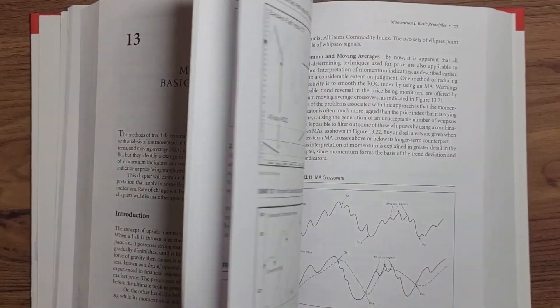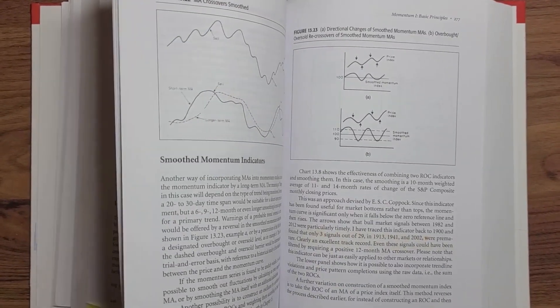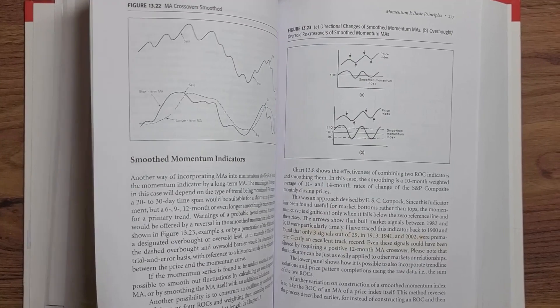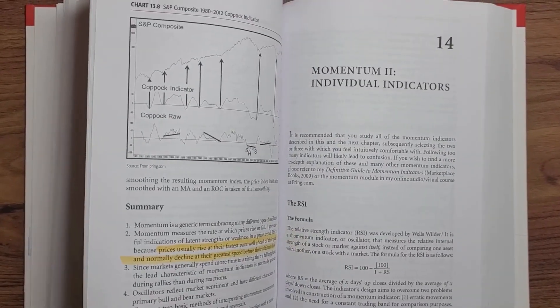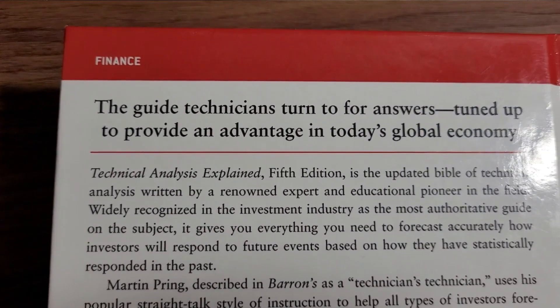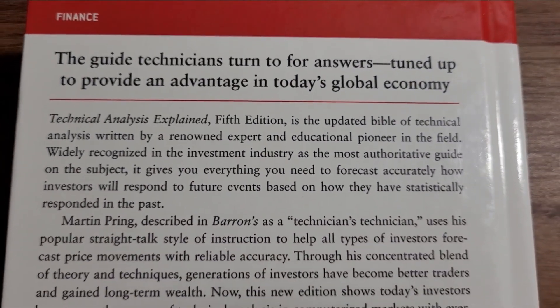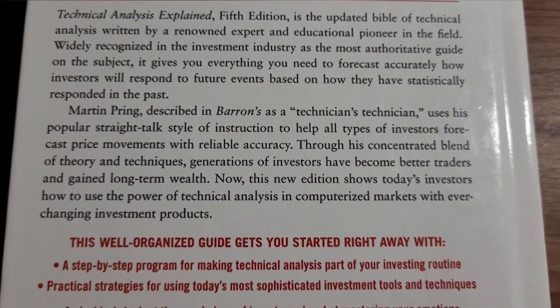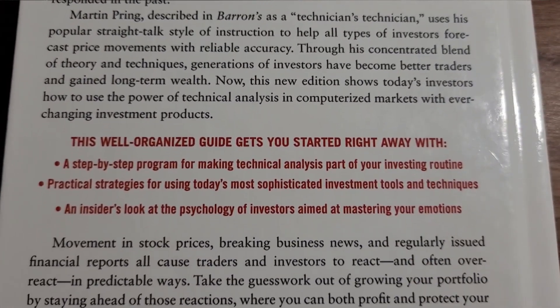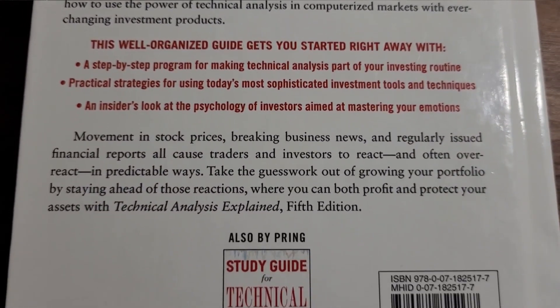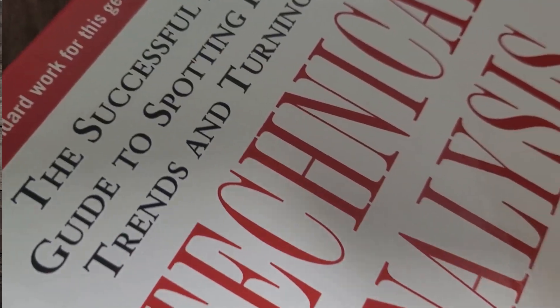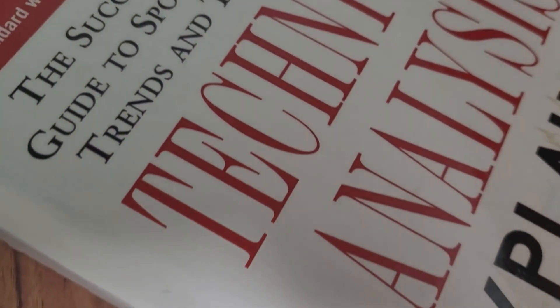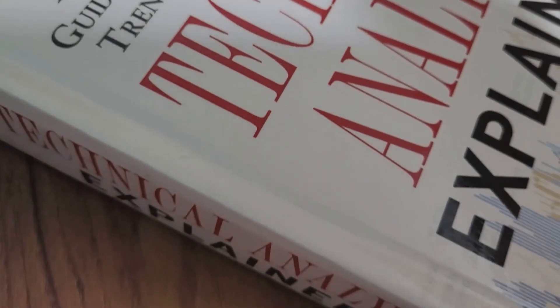These sections we've highlighted are just a glimpse of what Technical Analysis Explained has to offer. As one of the best books on technical analysis and trading systems, Martin J. Pring's writing style is engaging and accessible, making complex concepts easy to understand. By reading this book, you'll gain a solid foundation in technical analysis and trading strategies, empowering you to make better trading decisions and potentially improve your trading and investment performance.